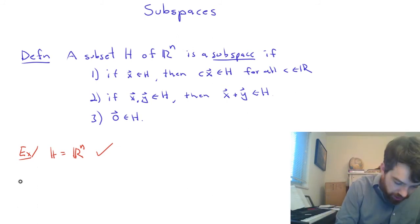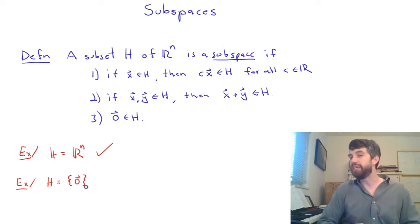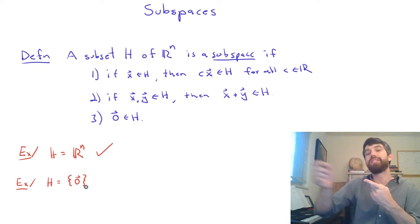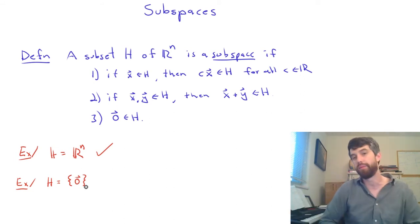I have another really pointless and trivial one here. It's going to be H is the set that contains only the zero vector. This is indeed going to be a subspace. Well, let's check the three properties. One, if I take that zero vector and I stretch it by any scalar C, then it's going to be the case that C times zero, which is just zero, is inside of there.